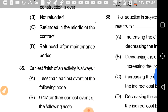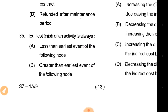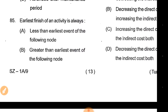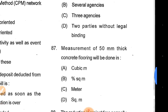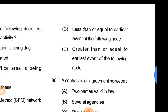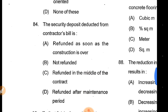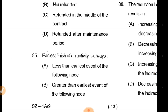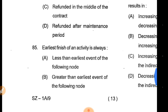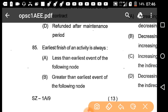Questions 84/85: The earliest finish of an activity is always greater than the earliest event of the following node. Option B is the correct answer.